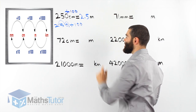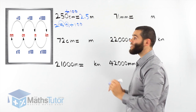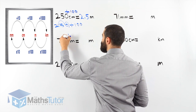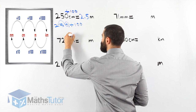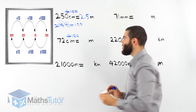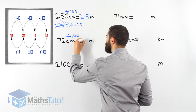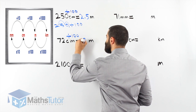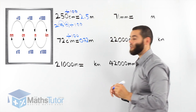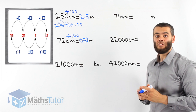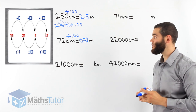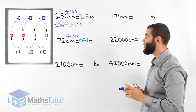From centimetres to metres again — same process, we're dividing by 100. 72 divided by 100 gives 0.72 metres. Grab your calculator and try it: 72 divided by 100 equals 0.72 metres.